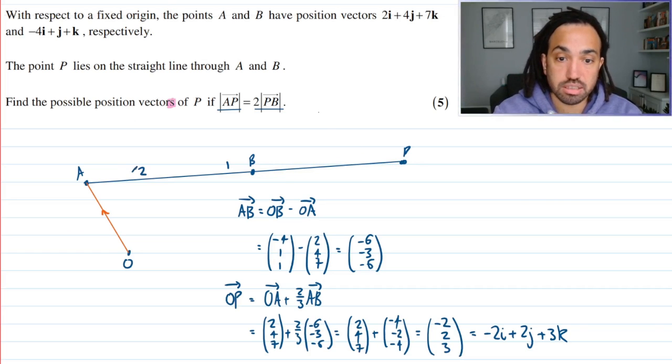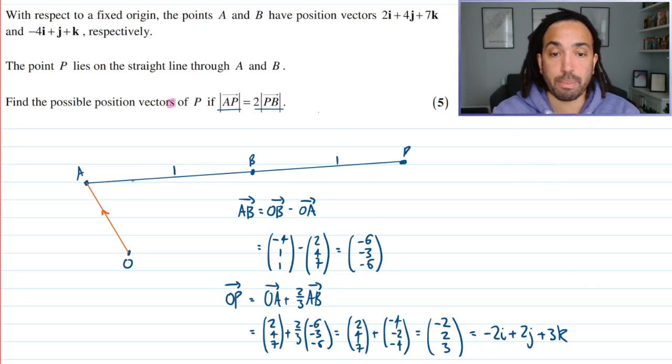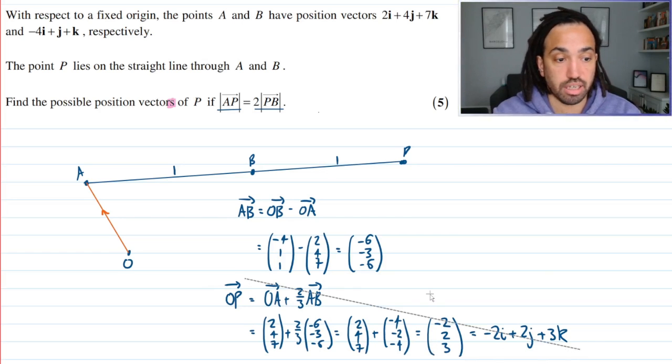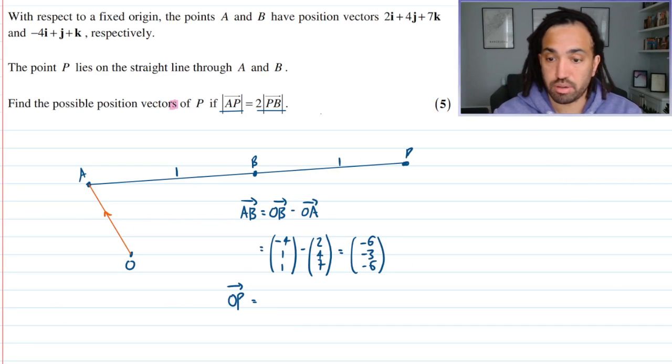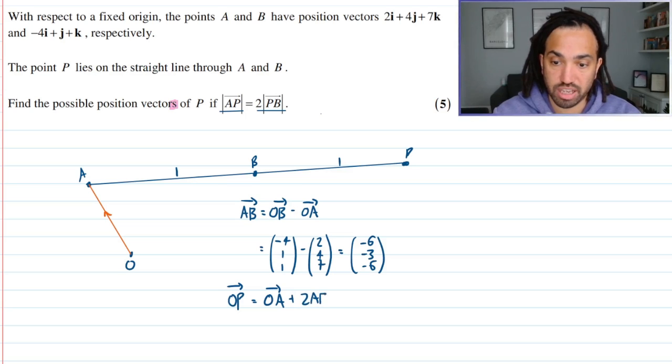So as long as if we call this distance from A to B 1, then this distance has to be exactly the same. So therefore A to P is twice B to P. Okay. So let's get rid of some working and grab some space. Okay. So this time we, to find O to P, I would do O to A plus two lots of A to B.